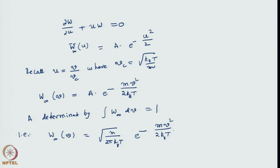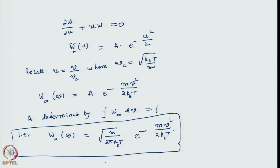That leads us to w_infinity(v) equals square root of (M / 2π k_B T) times e^(-mv²/2k_BT), where T is the temperature. This equation contains nothing new; it only guarantees that the equation we derived is consistent with the physics we started with, because this is the well-known Maxwell-Boltzmann distribution, consistent with the principle of equipartition of energy. It will reproduce all results from basic equilibrium principles obtained in the Langevin dynamics.